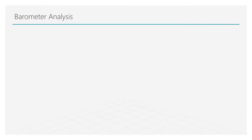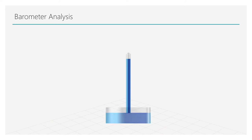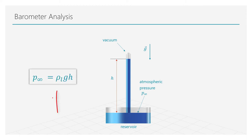Liquid barometers can measure the atmospheric pressure based on the height of a liquid column. A tube with a closed end is filled with liquid and then turned upside down with the open end submerged in a reservoir filled with the same liquid. The liquid in the column will first move and then stop at an equilibrium point where the fluid weight counterbalances the atmospheric pressure at the reservoir. Hence, the atmospheric pressure can be calculated as the density of the liquid times the gravity acceleration and the height of the liquid column.